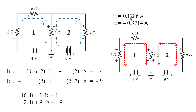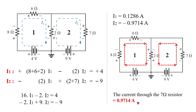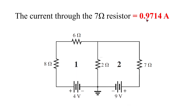The current through the 7 Ohm resistor is found as i1 minus i2, which gives 0.1286 plus 0.9714. The final result is 0.9714 A. This is the current through the 7 Ohm resistor.